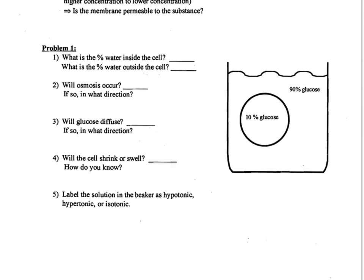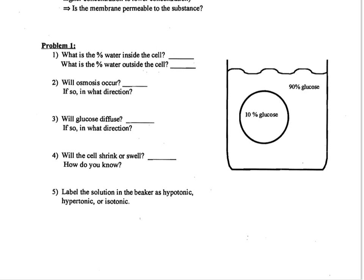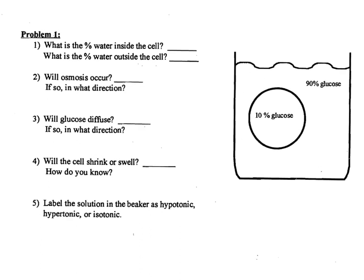When we go look at problem number one, the first step is always to figure out the percent of water inside and outside the cell. I'm going to fill in H2O inside and outside. To figure out the percent of water inside the cell, the percentages need to add up to 100. So if I already have 10% glucose, to get to 100 I need 90% water. On the outside of the cell, if I have 90% glucose, to get to 100 that means I have 10% water. That's always going to be the first step — fill in the percent of water. Problem number one says: what is the percent water inside the cell? We already figured out that was 90%, and outside the cell is 10%.